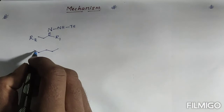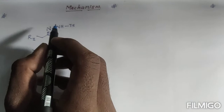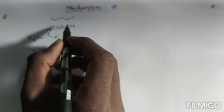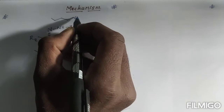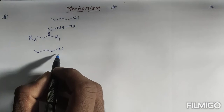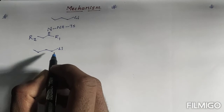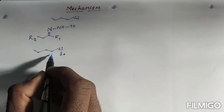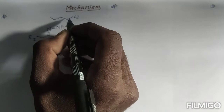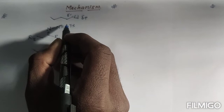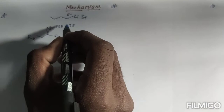In the general reaction we have base RLi. For convenience I am going to take butyllithium. R can be methyl lithium, butyl lithium, isopropyl lithium, whatever. The metal lithium is more electropositive compared to the aliphatic chain, so lithium possesses a partial positive charge and the carbon possesses a partial negative charge.